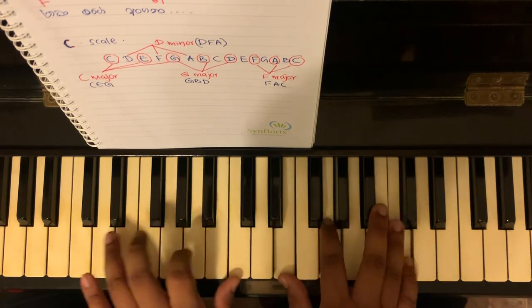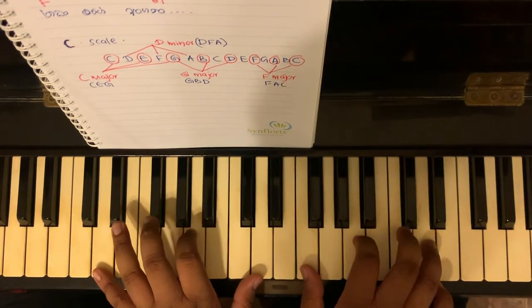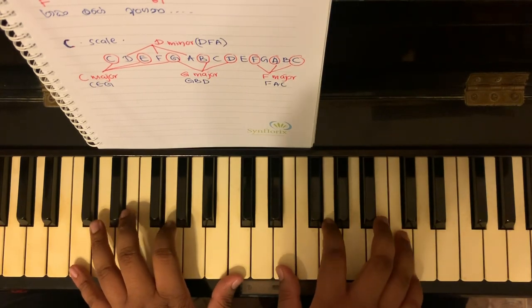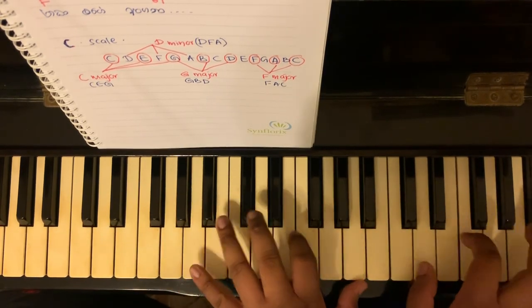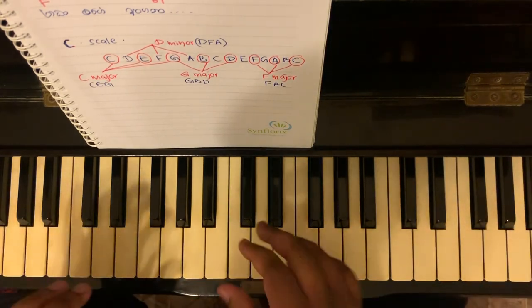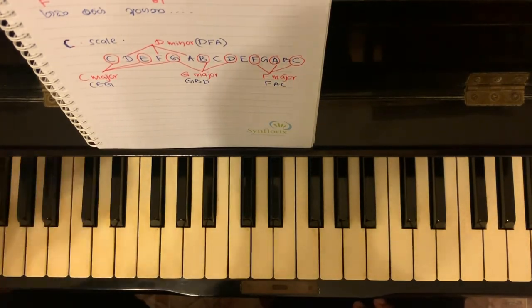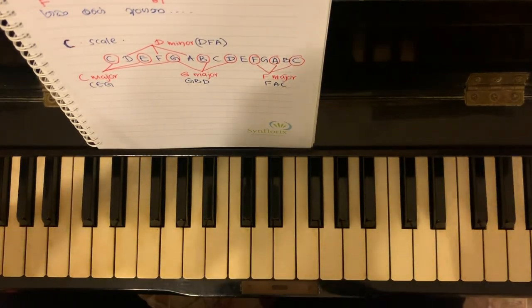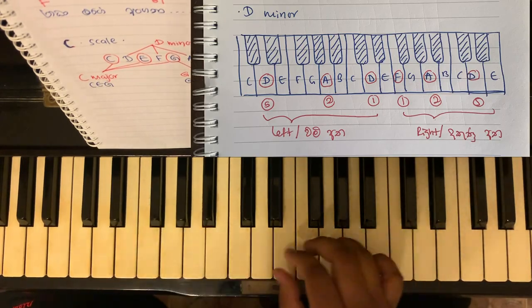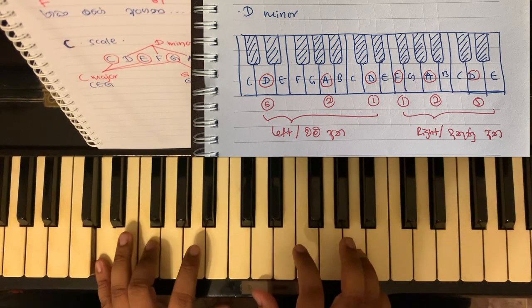Now we are going to use the other chord in our own chord. Here we are going to use D minor. Now we are going to start with this pattern. If you want to make this pattern, you can use this pattern. So we can adjust this in our D minor chord.